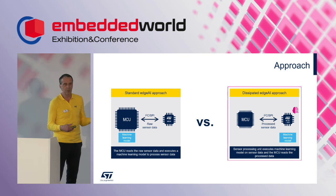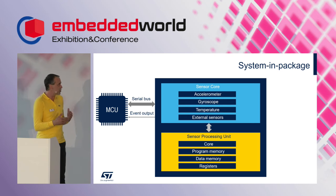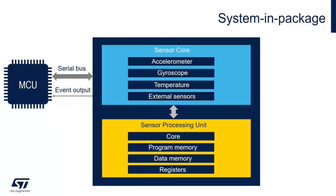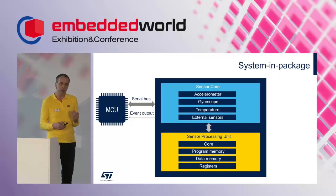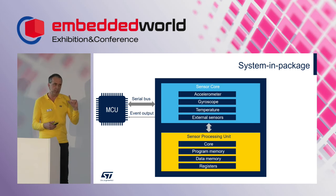The microcontroller can sleep most of the time. ST produces such a sensor, and here is a simplified block diagram. We have a sensor core — a MEMS sensor. In this particular use case we have an accelerometer, gyroscope, and companion temperature sensor, plus an option to connect an external sensor, so it also acts as a sensor hub. Then there is an integrated processing unit: a simplified RISC processor with core program memory, data memory, and registers, and a serial bus to exchange data with the microcontroller and to upload firmware. There is no flash memory in this sensor — RAM only, distributed between operation memory and program memory.